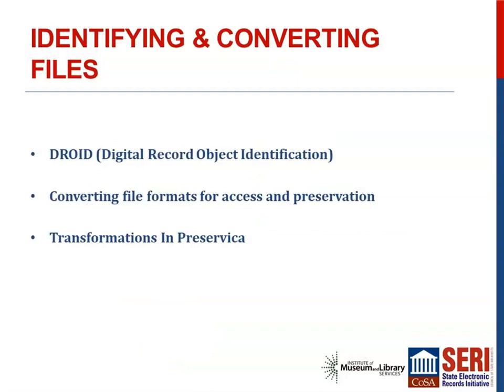The next step is identifying and converting file formats. Although Preservica can do some file conversion before ingest, which Morgan will go over, we convert some file formats beforehand if there isn't a migration pathway. We use a program called DROID — Digital Record Object Identification — which scans a set of records to determine what file formats are contained within the file sets and allows you to see where they're located. After using DROID we use a variety of different programs to convert file formats for preservation and accessibility. We now have a master list of file formats and programs we can use to convert them.